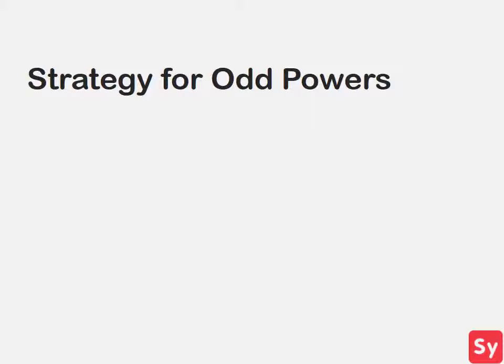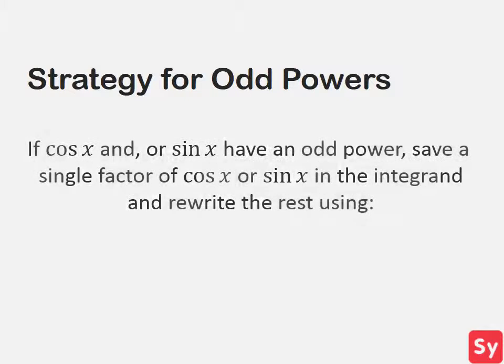We'll first focus on how to solve integrals with trig functions with odd powers. If cosine of x and/or sine of x have an odd power in the integrand, then you save a single factor of cosine of x or sine of x in the integrand and rewrite the rest using this trig identity. We'll see what this means in the next example.